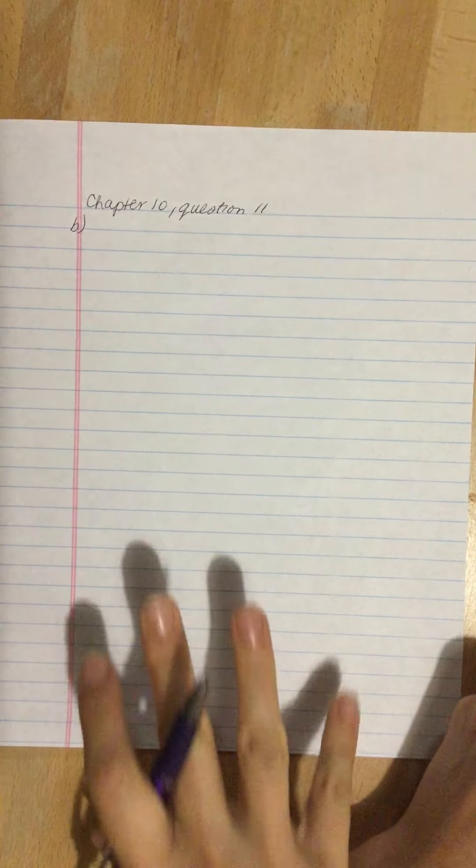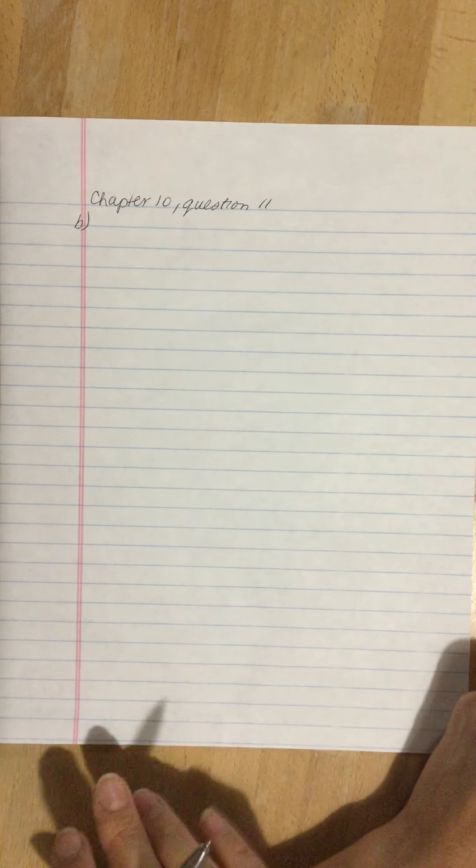Chapter 10, question 9b, continuing that question about high creative and low creativity participants and cheating. Compute Cohen's d to measure the size of the effect.